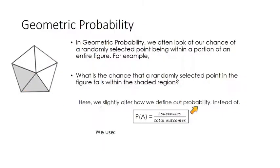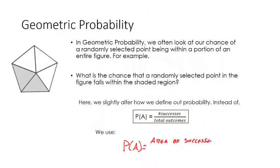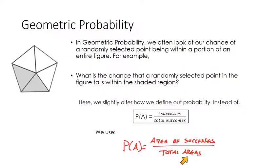Here we're going to take our previous definition of probability and slightly tweak it. Previously we said the probability of an event would be the number of successes out of total outcomes. For geometric probability, we're going to say the probability of an event is the area of successes out of total area. It's basically the same definition, just changing successes and total outcomes to be in terms of areas — the area we want out of the total area.